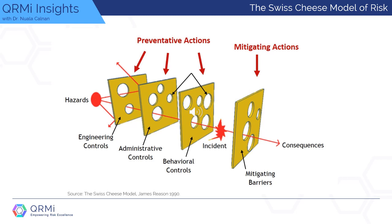Reason's model has become the common mode through which complex accidents are routinely examined and understood. In the model, each barrier designed into the system — shown here as engineering controls, administrative controls, or behavioral controls — has unintended weaknesses or holes, hence the similarity with the Swiss cheese.